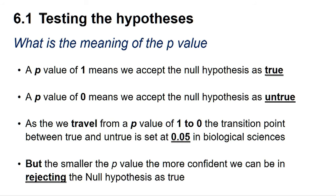So what is the meaning of the p-value? A p-value of 1 means we can accept the null hypothesis as true, whereas a p-value of 0 means we can accept the null hypothesis as untrue. As we travel from a p-value of 1 to 0, the transition point between true and untrue is set at 0.05 in the biological sciences.